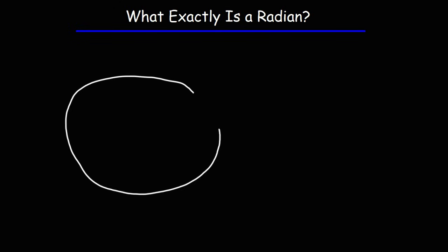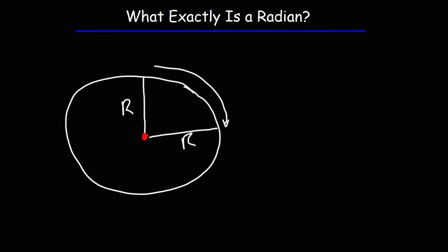First, let's draw a circle. And let's draw the radius of the circle. The radius of the circle is the distance between the center of the circle — highlighted in red — and any point on the circle. Now we're going to draw another radius. The distance between these two points, let's call this point A and point B, is known as the intercepted arc, or you can call it the arc length, which most textbooks use the symbol S for. The arc length is equal to the angle measure times the radius of the circle.